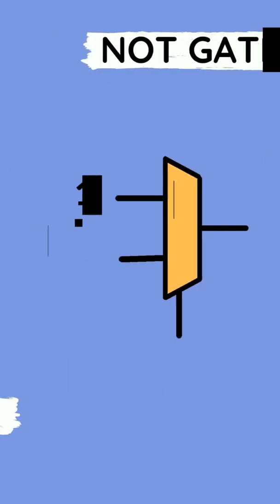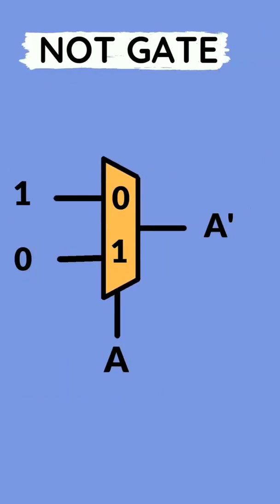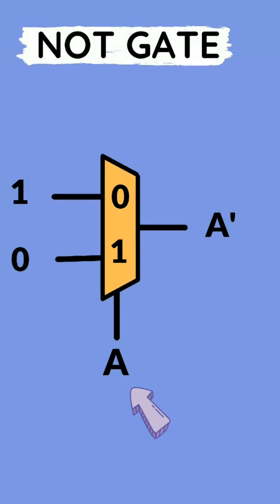To prove it, let's implement NOT gate. Here we have one, zero as inputs and A as select line. So output is A complement.